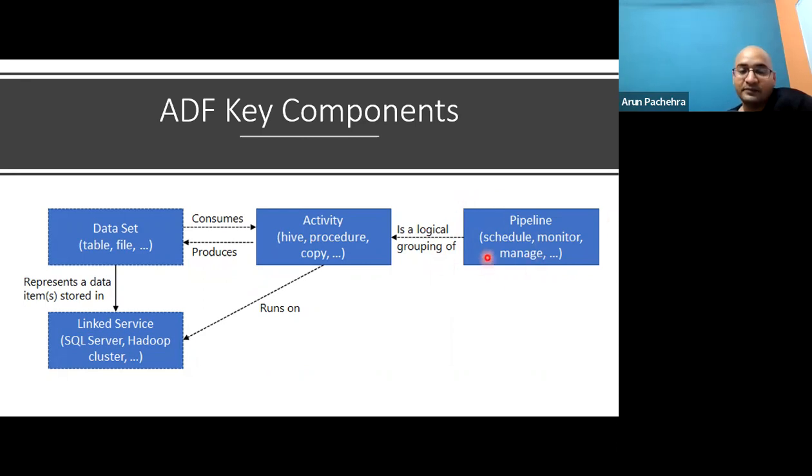Activities represent a processing step in a pipeline. For example, you might use a copy activity to copy data from one data store to another data store. Similarly, you might use a hive activity which runs a hive query on Azure HDInsight cluster to transform or analyze your data. Data factory supports three types of activities: data movement, ingestion or export, data transformation with the help of other services, and control activities.